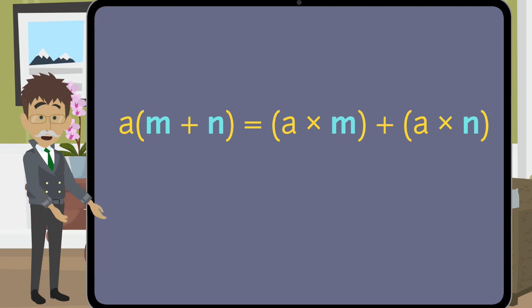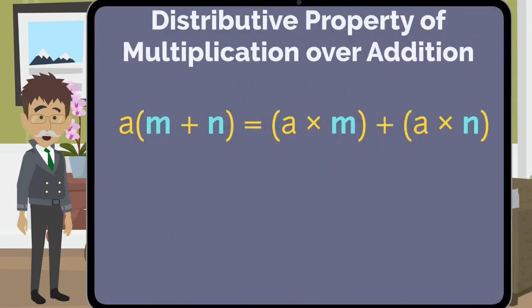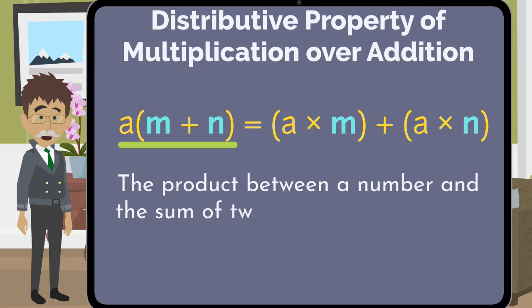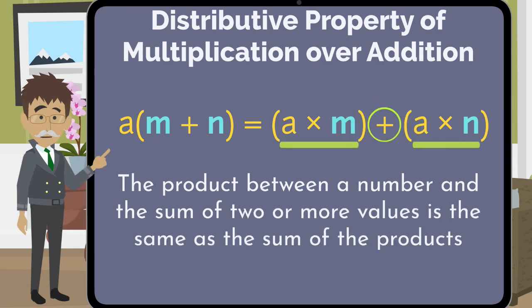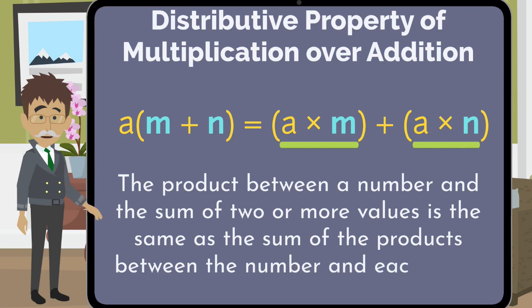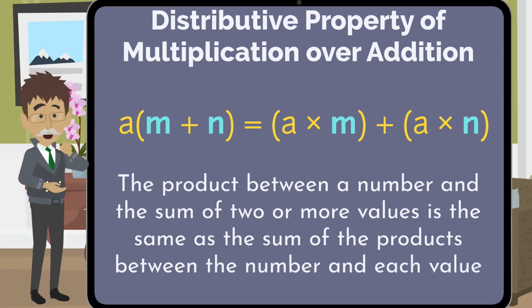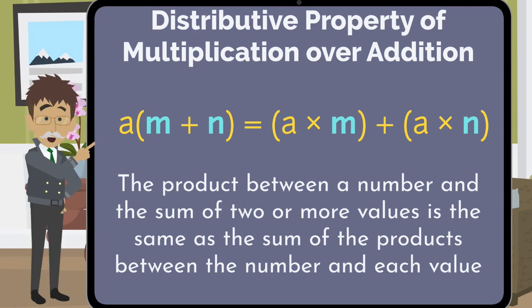This equation represents the distributive property of multiplication over addition. The distributive property states that the product between a number and the sum of two or more values is the same as the sum of the products between the number and each value. The definition is a mouthful, but what it means is powerful. It allows us to expand expressions to make them easier to work with.